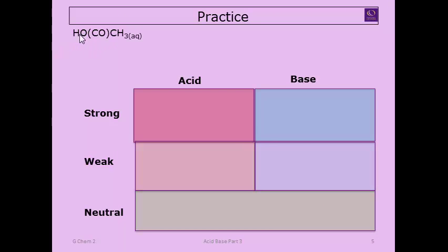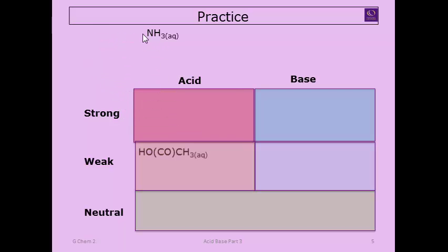First example: a C double-bond O in brackets with an OH — that motif is the signal for an organic acid, and all organic acids are weak acids. Next, nitrogen bound to three things — three bonds on nitrogen — that's a weak base.